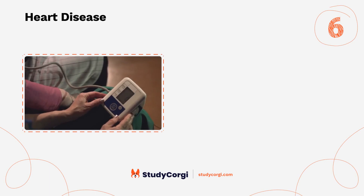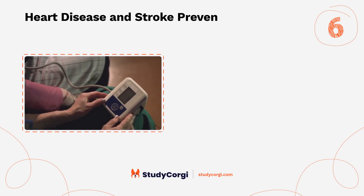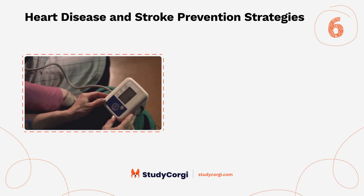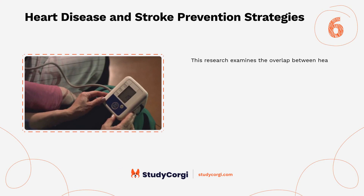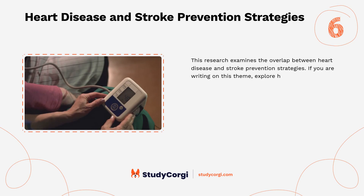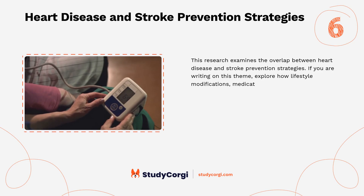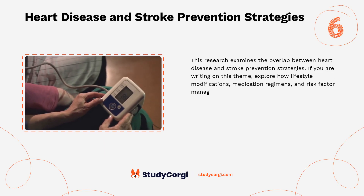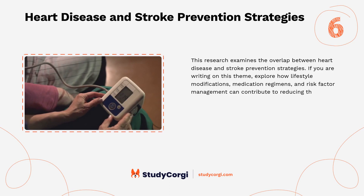Heart Disease and Stroke Prevention Strategies. This research examines the overlap between heart disease and stroke prevention strategies. If you are writing on this theme, explore how lifestyle modifications, medication regimens, and risk factor management can contribute to reducing the incidence of these cardiovascular events.